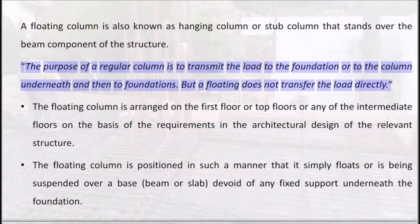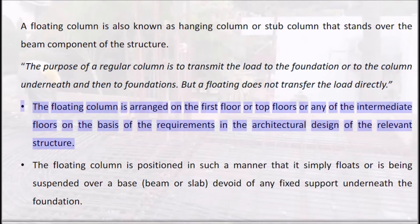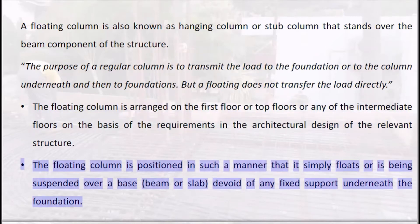The purpose of a regular column is to transmit the load to the foundation, or to the column underneath and then to foundations. But a floating column does not transfer the load directly. The floating column is arranged on the first floor, top floors, or any intermediate floor based on requirements in the architectural design. It is positioned such that it simply floats or is suspended over a base beam or slab, devoid of any fixed support or foundation underneath.